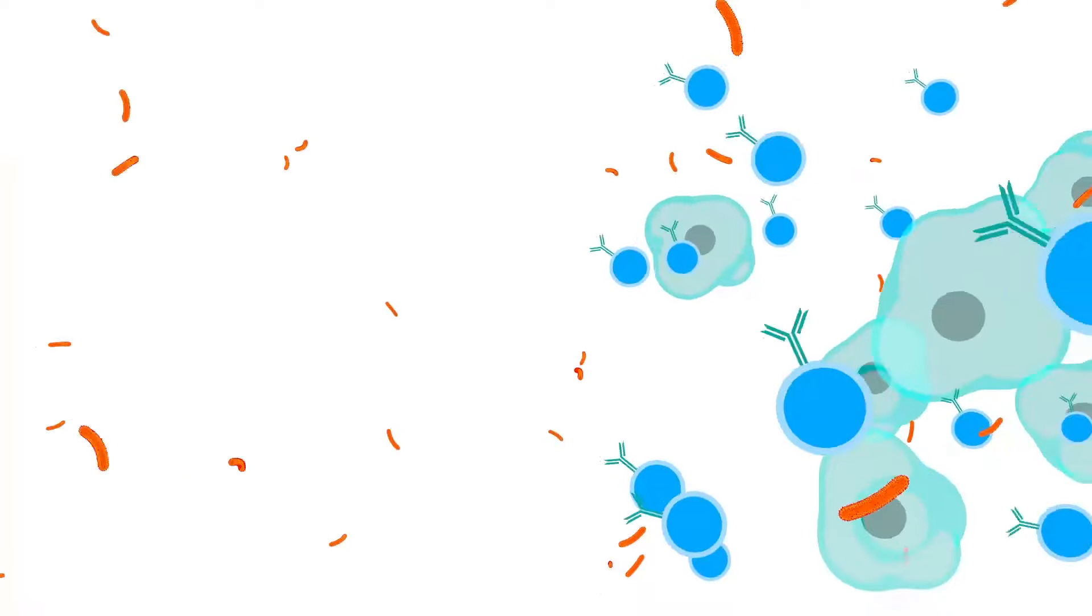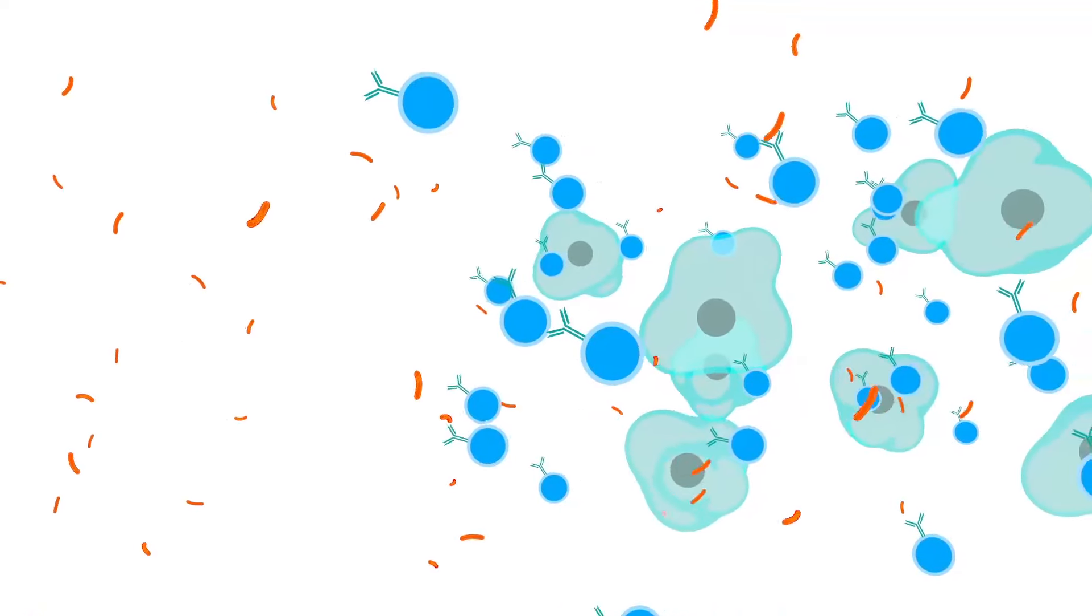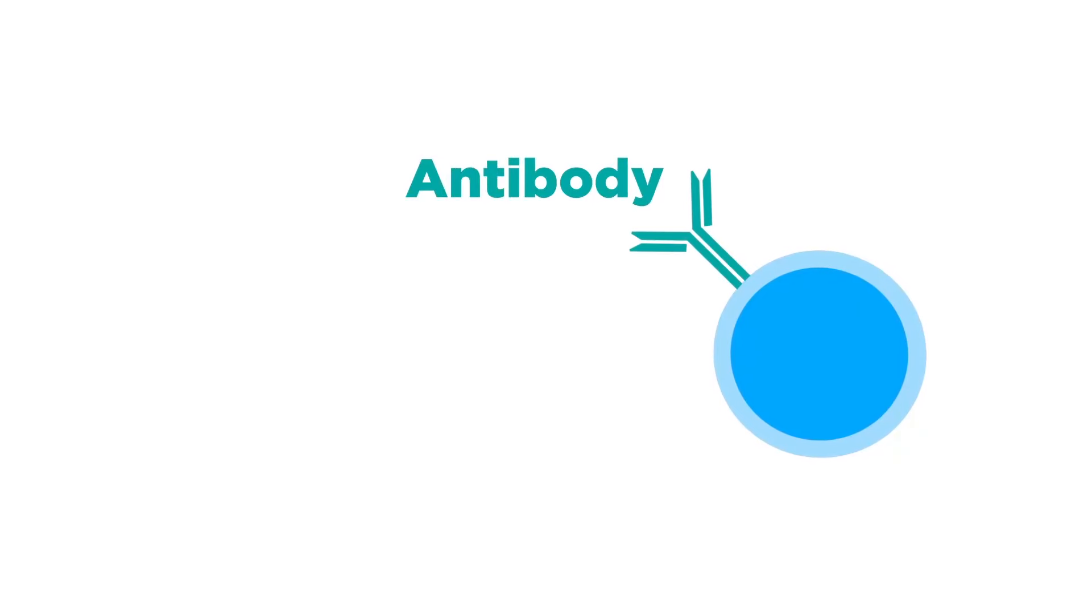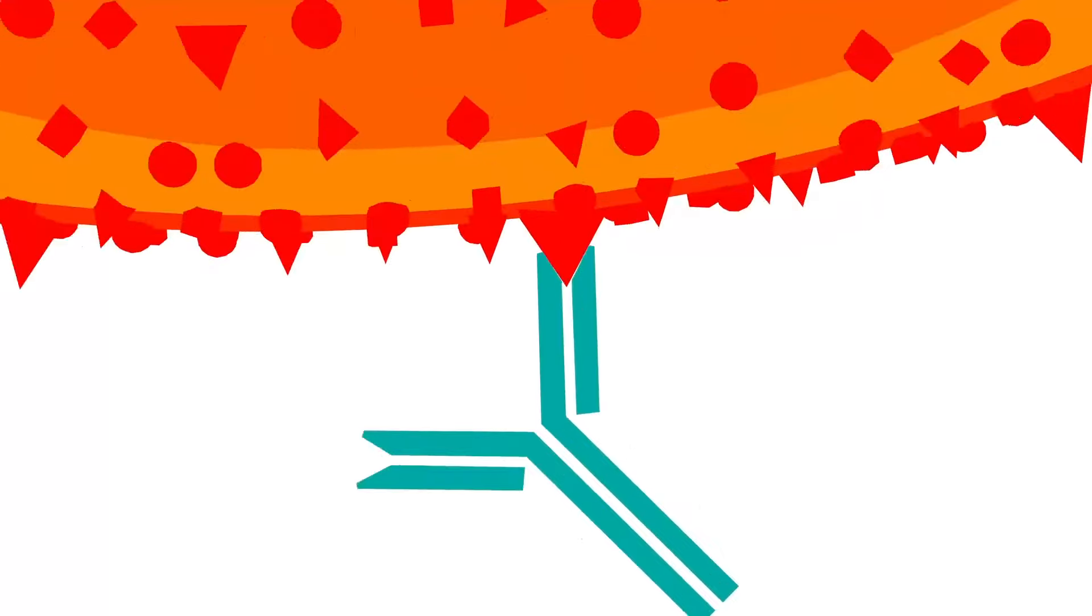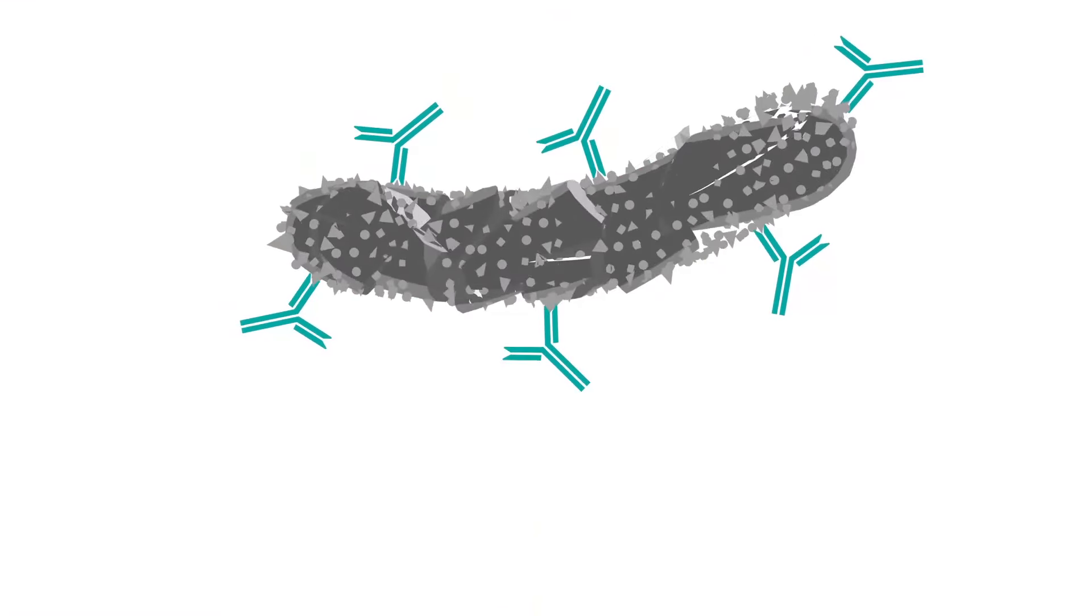They trigger a complex chain of events, involving many different types of white blood cells working together. One type of white blood cell is able to make antibodies to fight the invaders. Antibodies can stick to the proteins or sugars on the bacteria's surface, and this kills the bacteria or disables them.